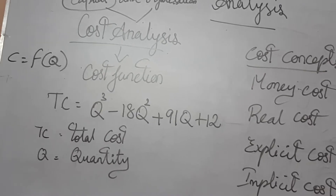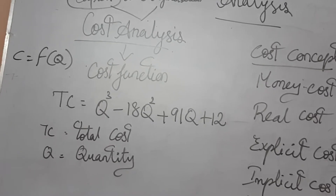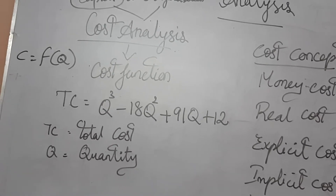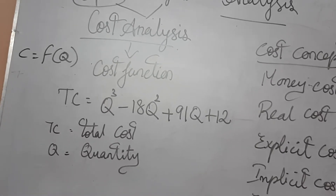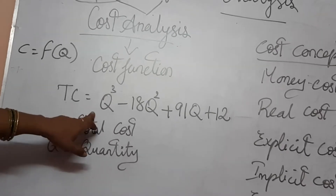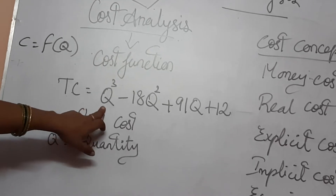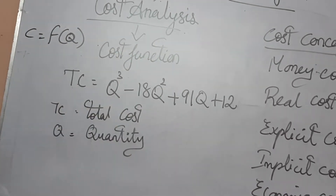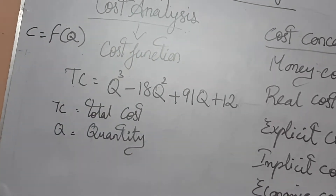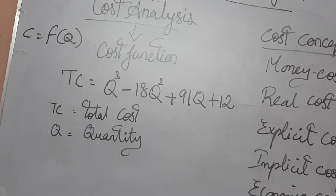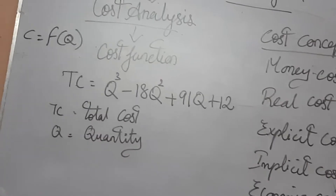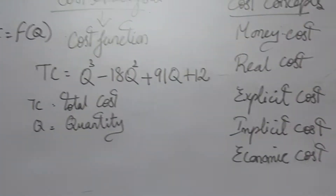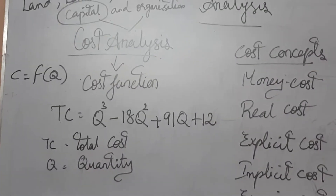For example, the formula given is: Total Cost (TC) = Q³ − 18Q² + 91Q + 12, where TC is total cost and Q is quantity.